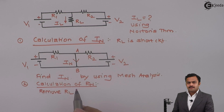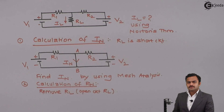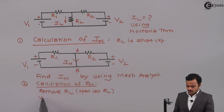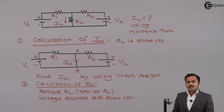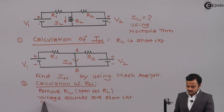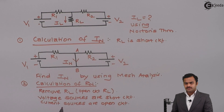For calculation of RN, we remove RL — that means open-circuit RL. Since we have two voltage sources, and a voltage source's internal resistance is zero, voltage sources are replaced by short circuits. If a current source were present, it would be replaced by an open circuit, because the internal resistance of an ideal current source is infinite, and infinite resistance means open circuit.